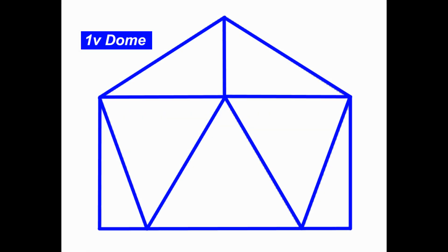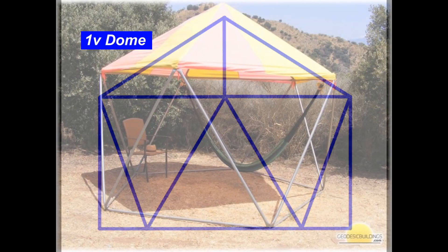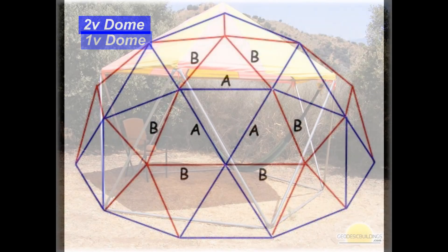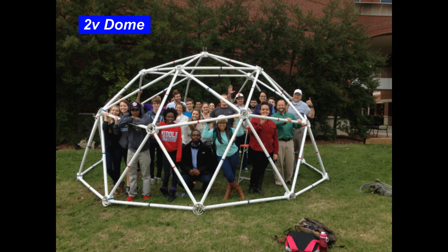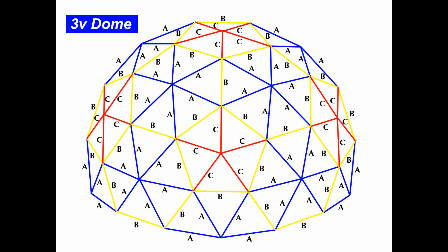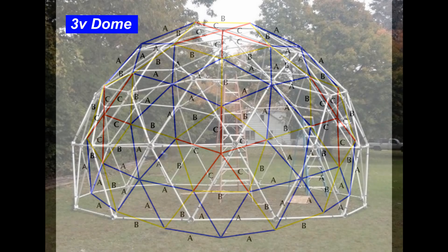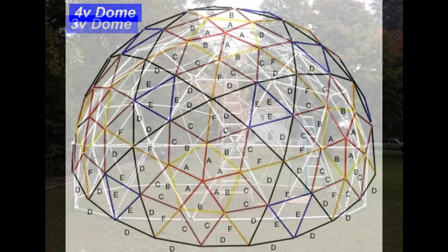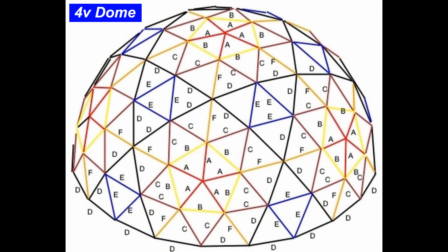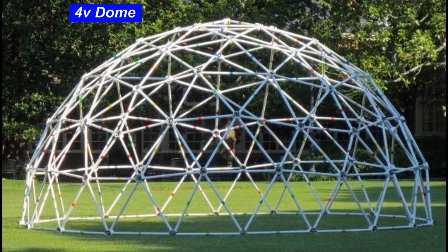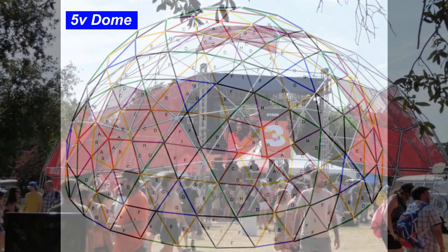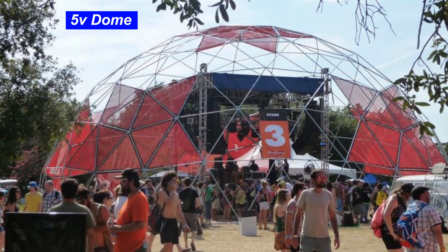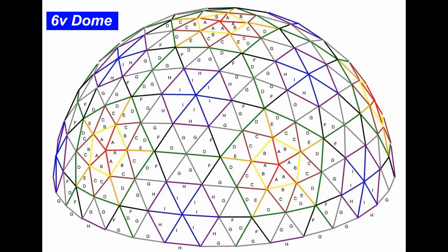Here are some examples. This is a 1 frequency schematic and a 1 frequency dome. A 2 frequency schematic and dome. A 3 frequency dome. 4 frequency. 5 frequency. And a 6 frequency dome.